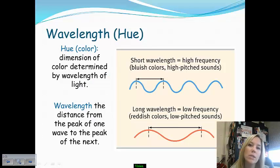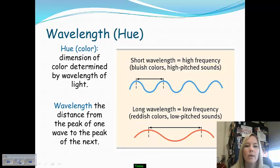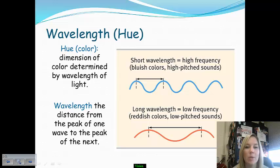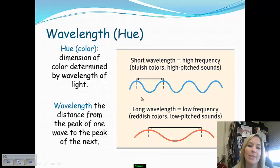The first thing to keep in mind when looking into vision is wavelength. When wavelength is established for our eyes to pick up, it typically involves color and the hue of something. The dimension of color is determined by the wavelength of light. If it is a short wavelength, that means it has a high frequency and it's going to produce bluish colors.